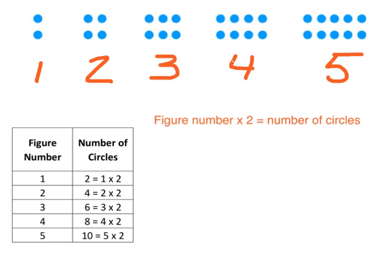So in other words, we can say that the figure number times two is going to equal the number of circles. So how many circles would there be, for example, if we were on figure number 10? Well, figure number 10, if we take that and multiply it by two, we get 20. So figure number 10 would have 20 circles.